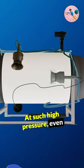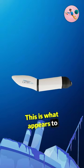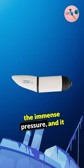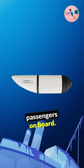At such high pressure, even the slightest flaw in the hull could cause it to implode. This is what appears to have happened to the Titan. The submersible's hull failed under the immense pressure, and it imploded in a catastrophic event that instantly killed the five passengers on board.